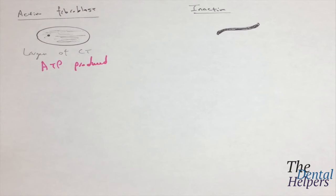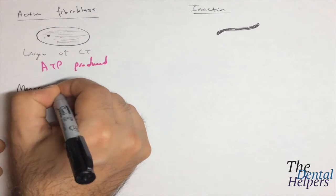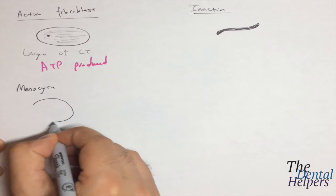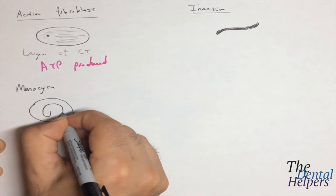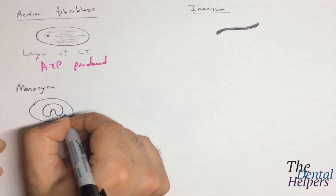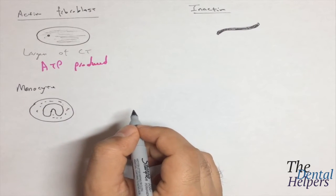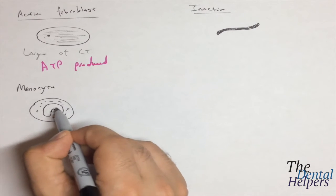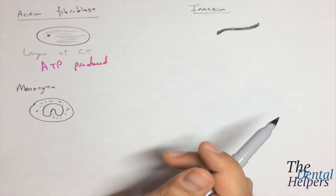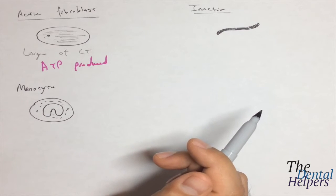Next we have our monocytes. Basically if we're looking under the scope, we're going to see it's kind of U-shaped in the center. These guys are large and abundant with basophilic cytoplasm, and the nucleus of course is indented giving this U-shape. The Golgi complex and the centrioles live in the nuclear indentation, and these are the progenitors of macrophages.